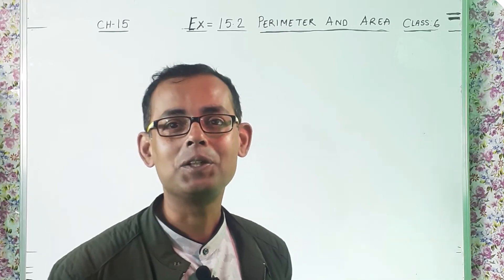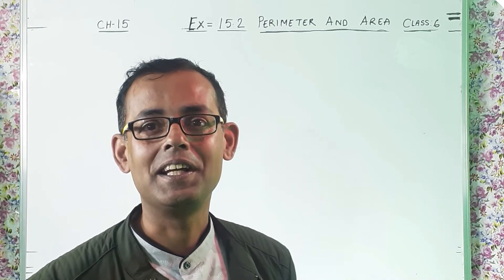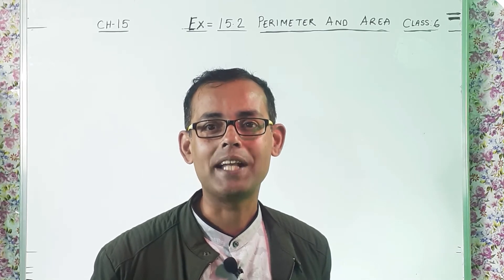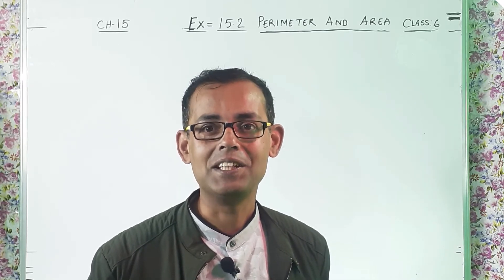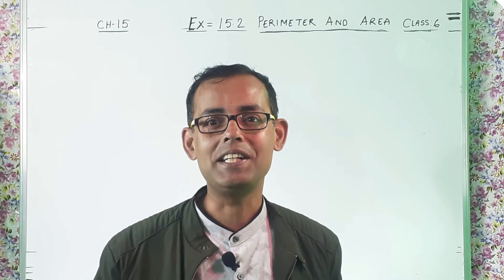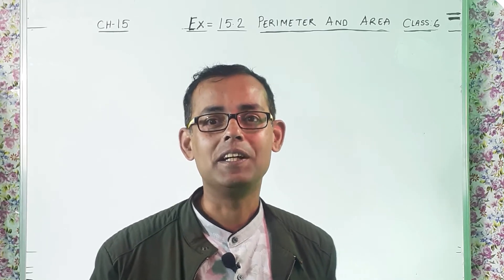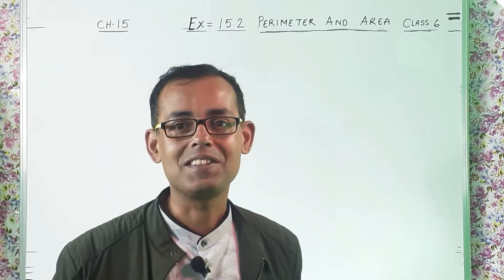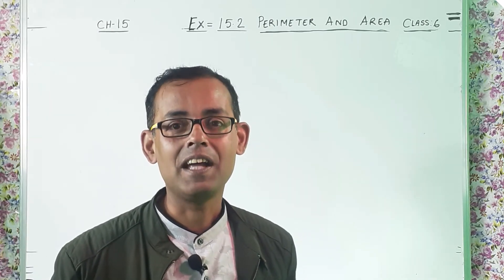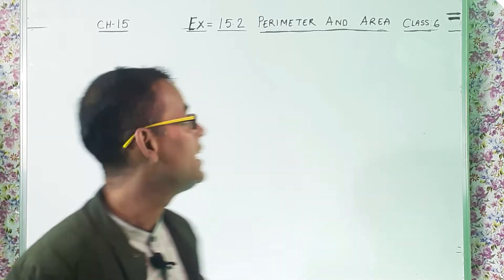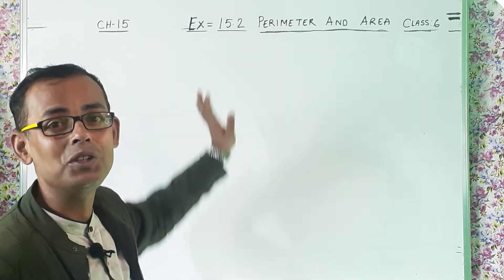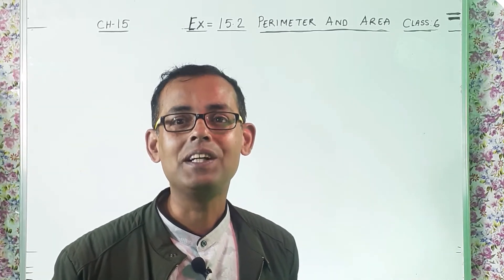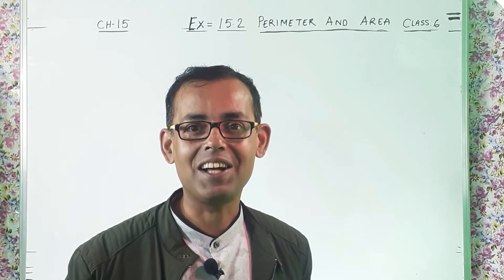Hello and good evening. I am Surajit Day and you are watching my YouTube channel Econometrics Day. Today we are going to study Chapter 15, perimeter and area of Class 6, and we are going to solve Exercise 15.2. So without wasting further time, let's start the class.